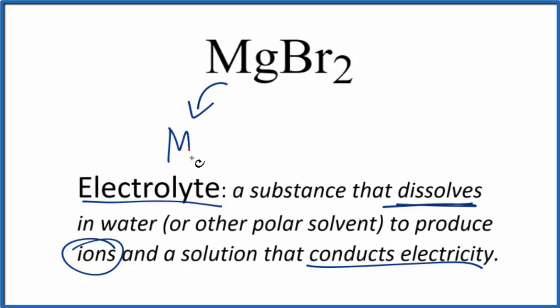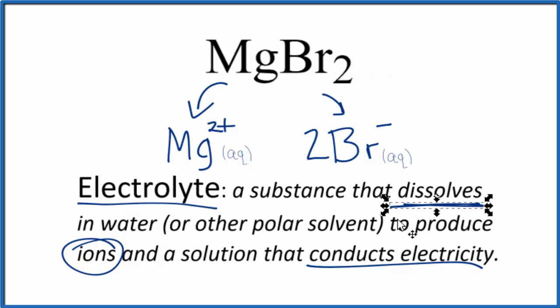We'll get Mg, and that'll be 2+, because the magnesium ion is in group 2 on the periodic table. And then the bromide ion, that's Br-, and we'll have 2 of these bromide ions because of this 2 here. Let's put Aq after these, since this is going to be dissolved in water.